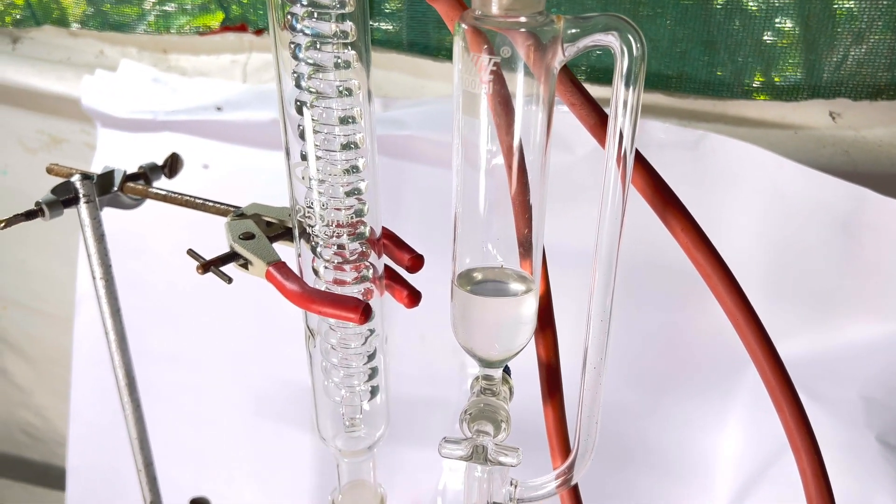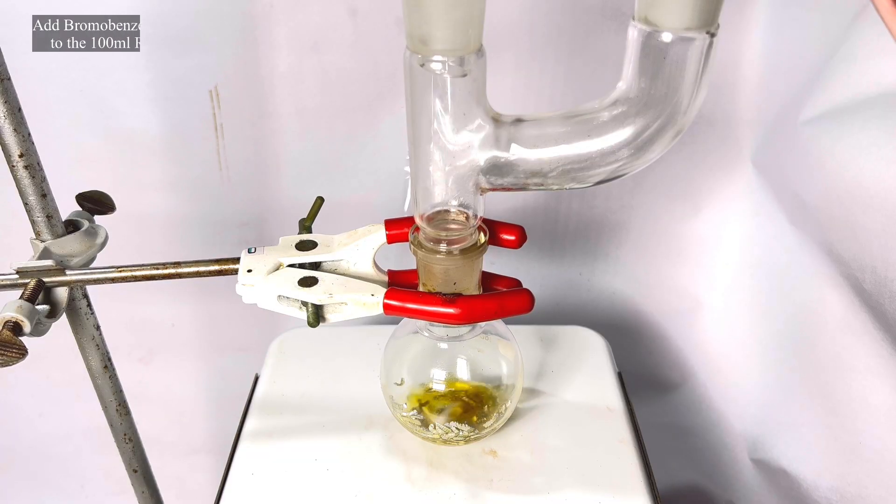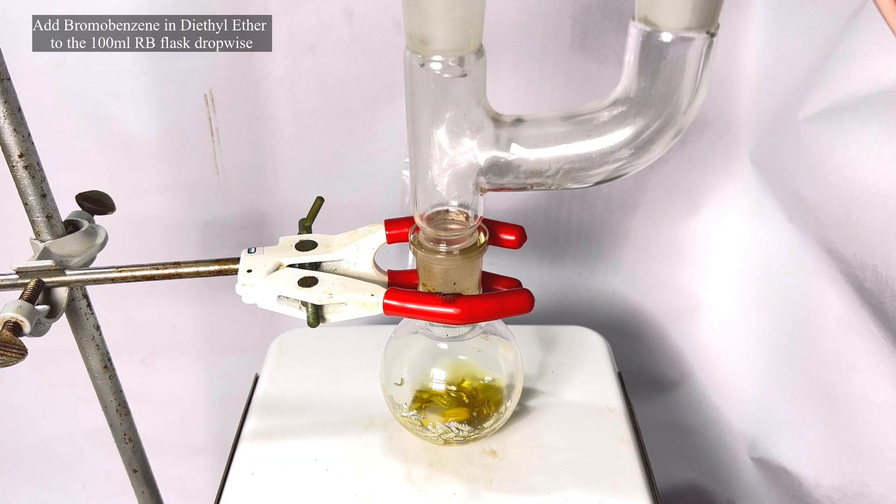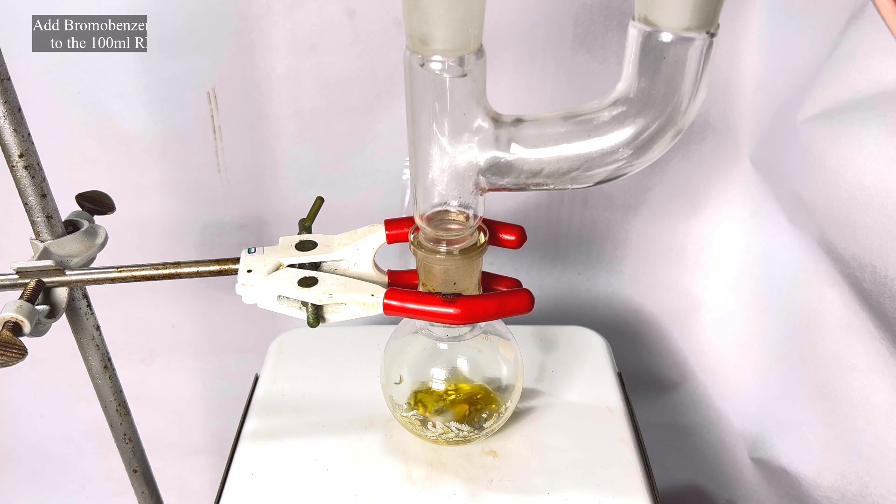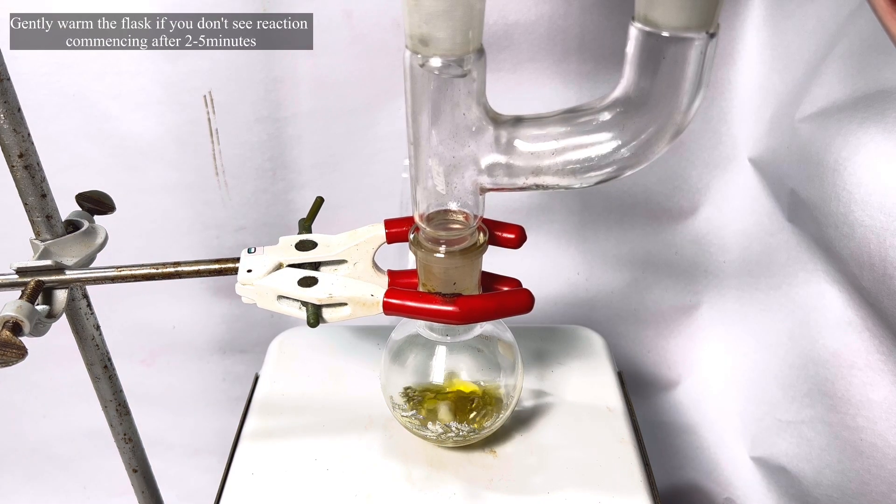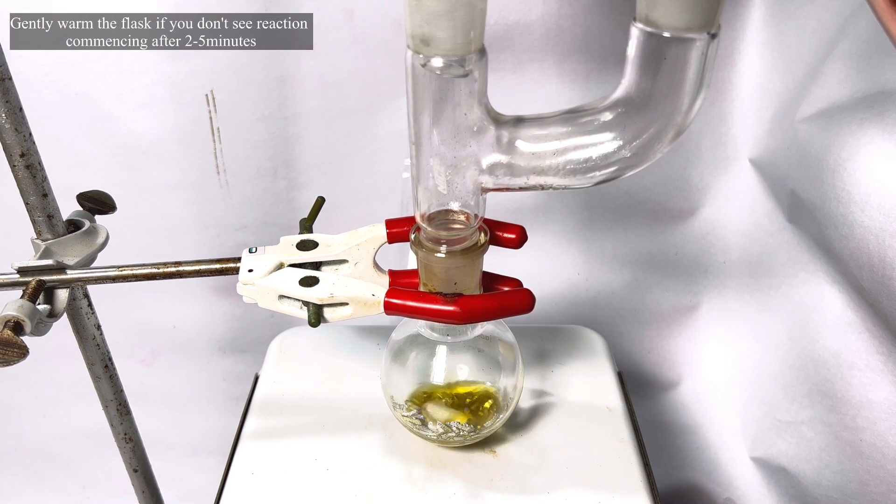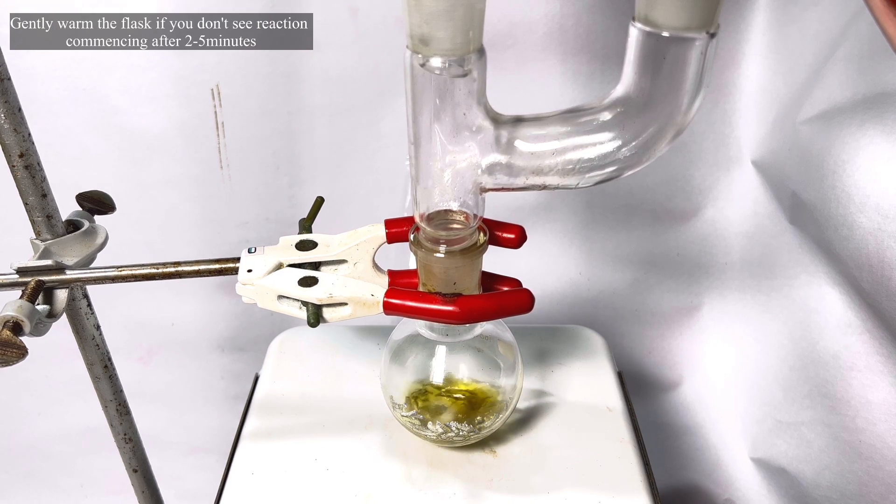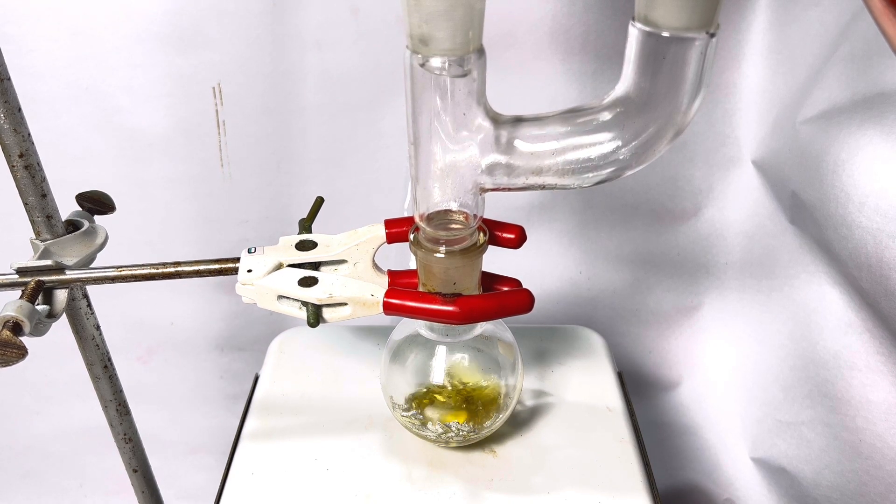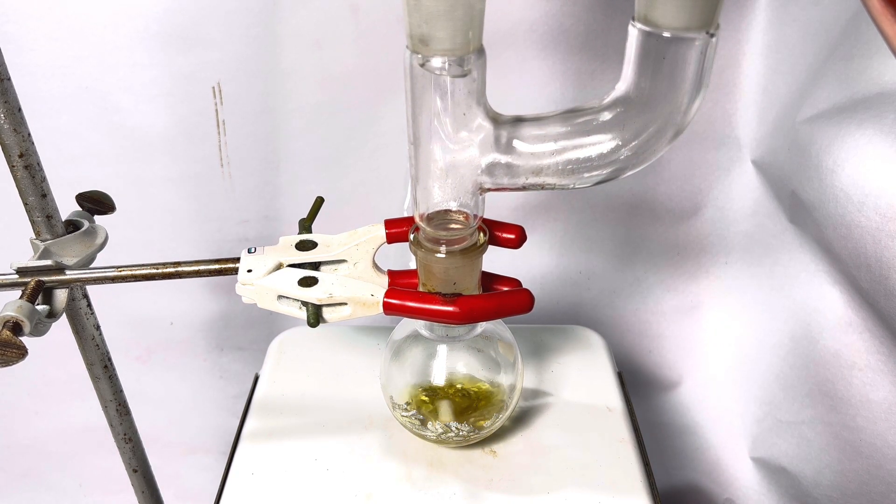With the stirring turned on, bromobenzene in ether solution was slowly dripped into the flask. If you don't see the reaction commencing on its own, you can gently warm the contents of the flask. Always keep a bowl of cold water or ice just in case the reaction goes out of control and ether starts to boil away.